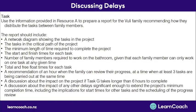In our last video, we found the total and free float times. In this video, we're going to answer the last two bullet points — discussing the impact on the project if a task takes longer than expected to complete, as well as discussing the impact of any other delay significant enough to extend the project's minimum completion time, including implications for start times of other tasks and the scheduling of the progress review. To discuss these, we need our total float and free float times, as well as our network diagram and Gantt chart.